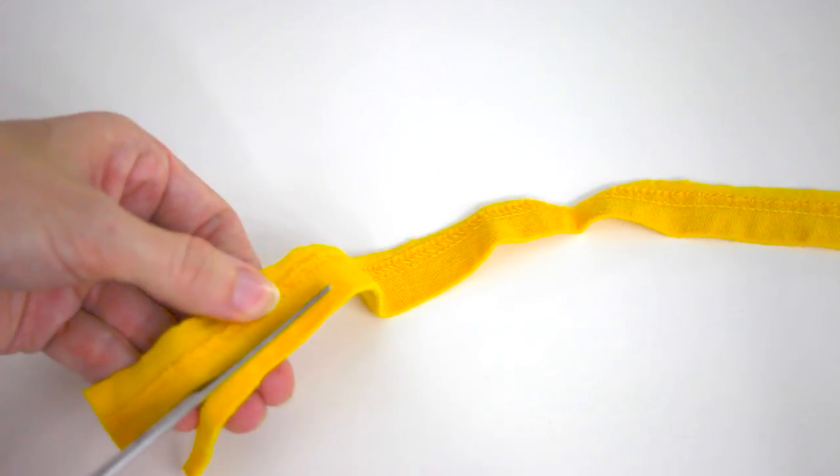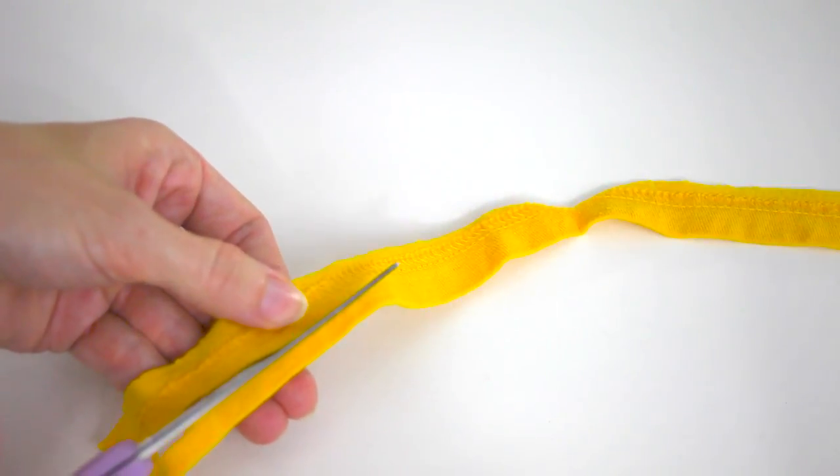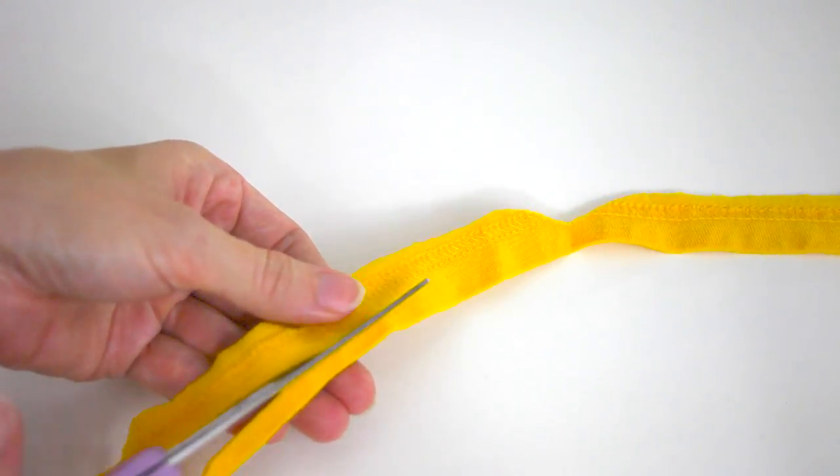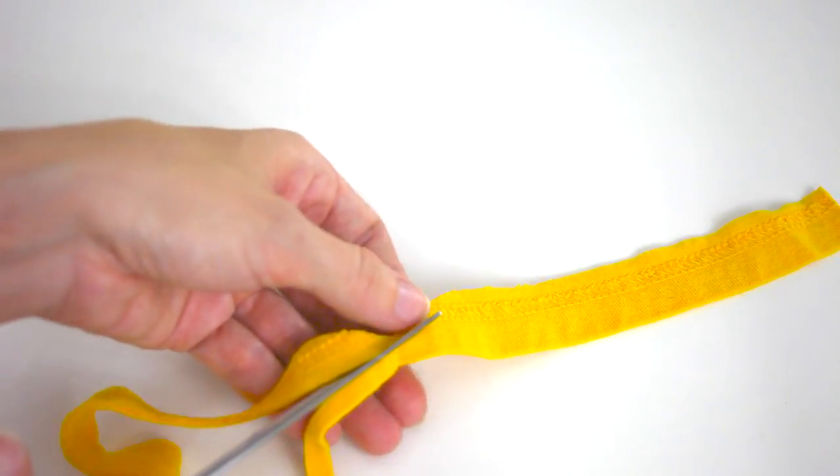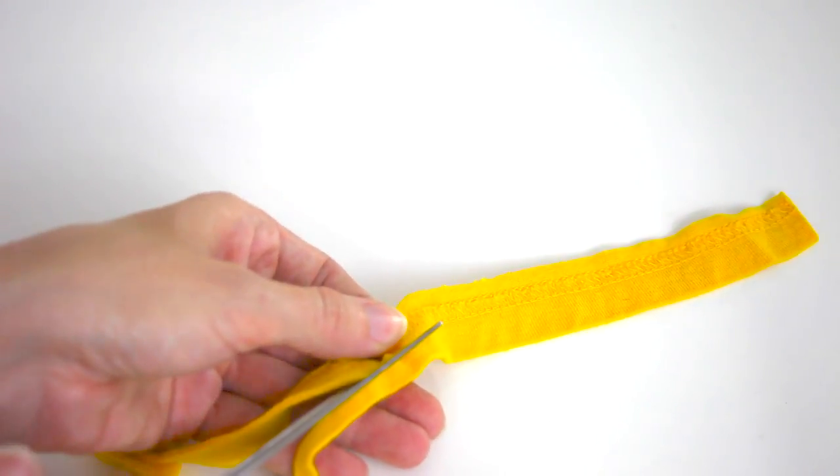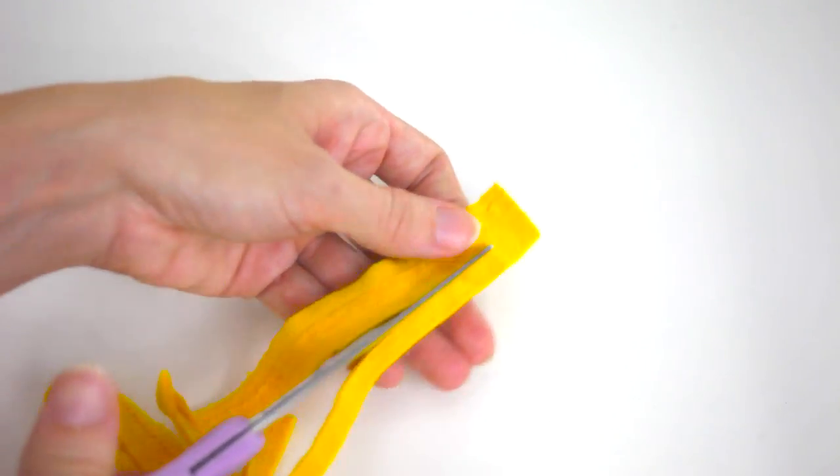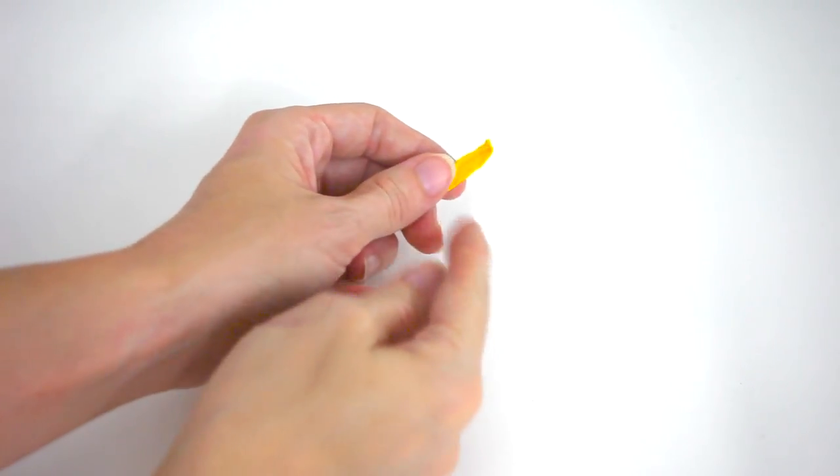Cutting off about a quarter of an inch, that's the part I'm gonna work with. Using the sleeve of the t-shirt works really well because it's already the right length to make a bracelet.